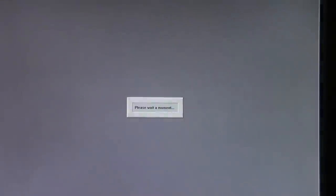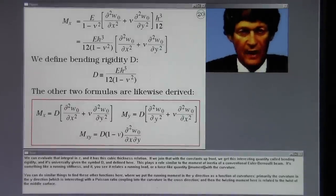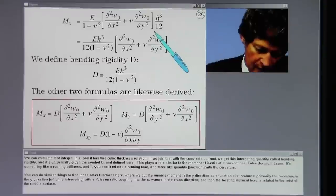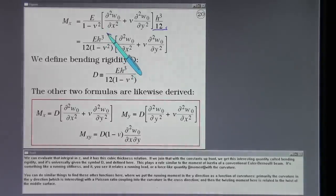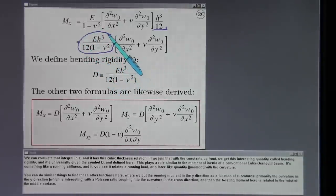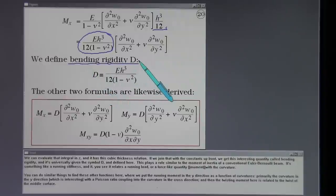The z coordinate is added in here. Clearing out some of these terms that are only functions of x and y and keeping the z integral here. We're starting to get a separation of the roles of the x, y, and z coordinates. We can evaluate that integral in z and it has this cubic thickness relation. If we join that with the constants up front we get this interesting quantity called bending rigidity and it's universally given the symbol D and defined here.